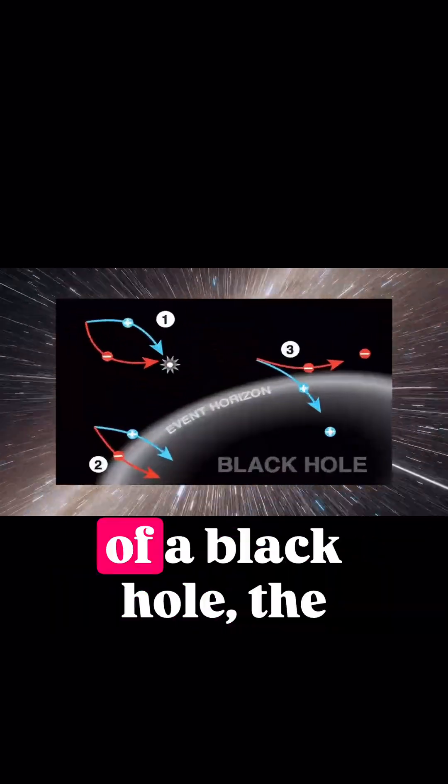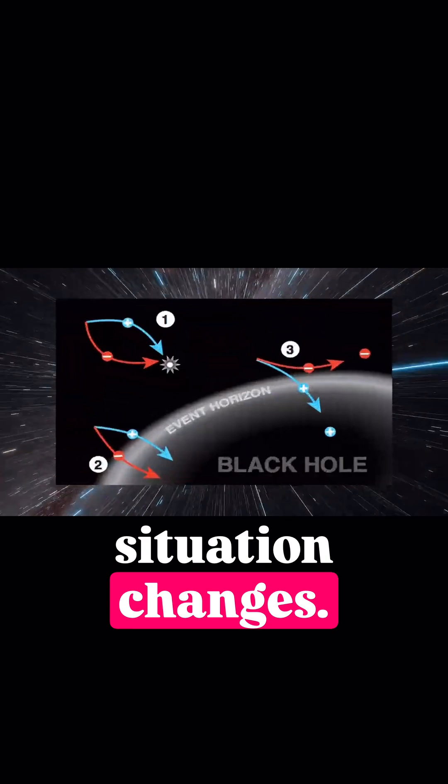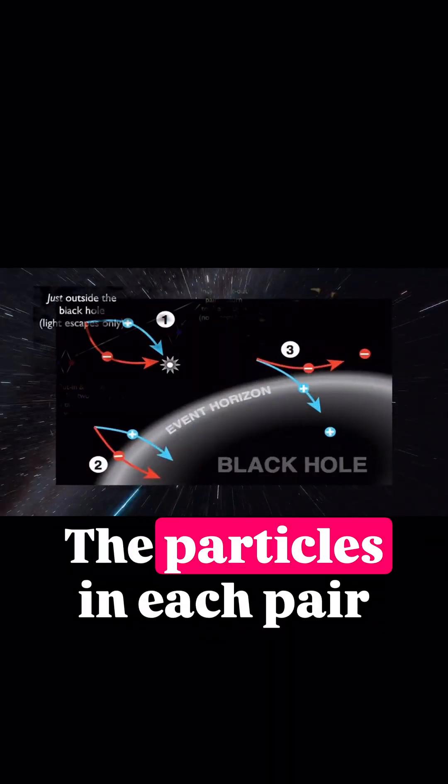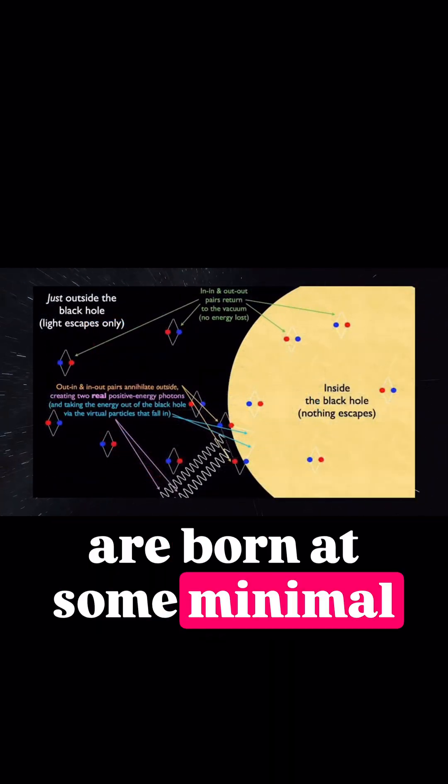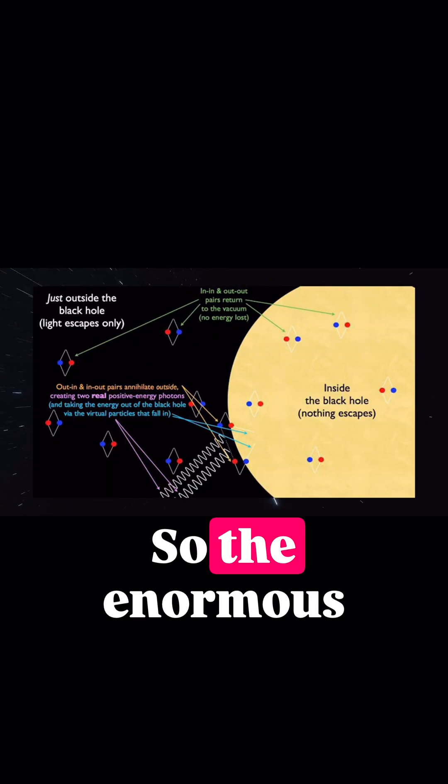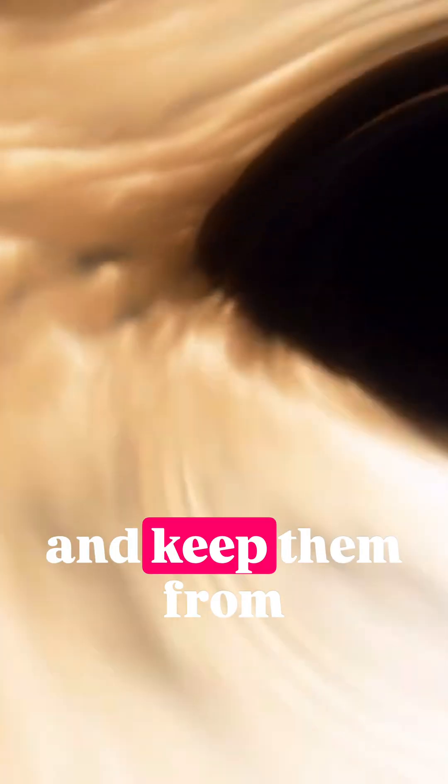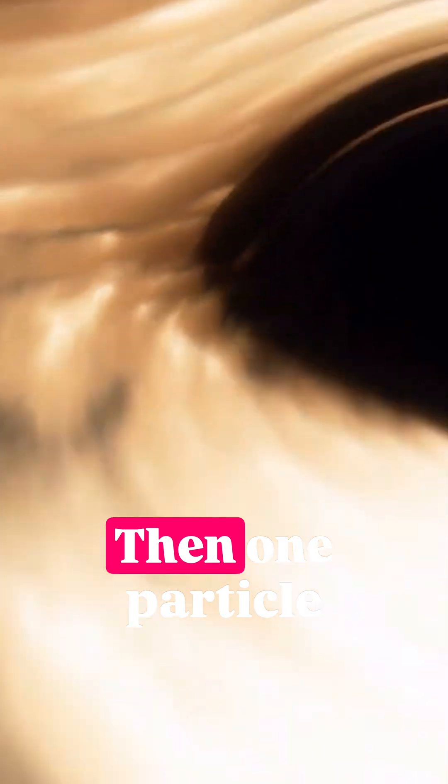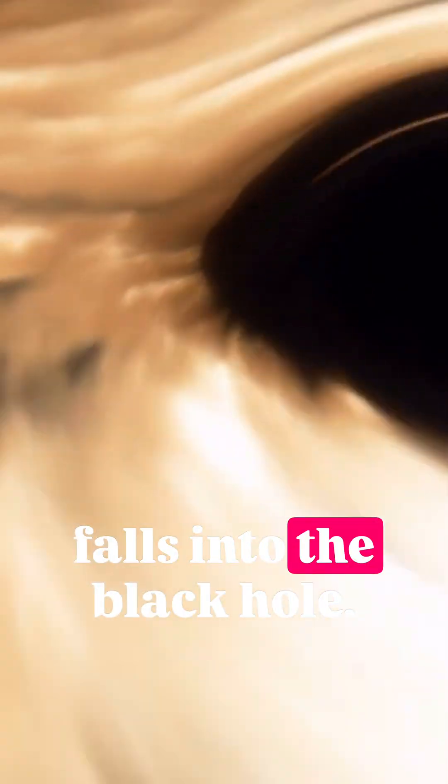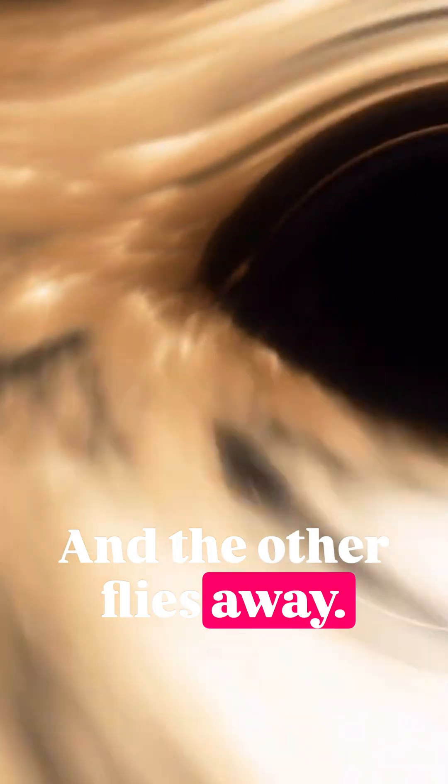But near the event horizon of a black hole, the situation changes. The particles in each pair are born at some minimal distance from each other, so the enormous tidal forces of the black hole can separate the particles and keep them from annihilating. Then one particle falls into the black hole, and the other flies away.